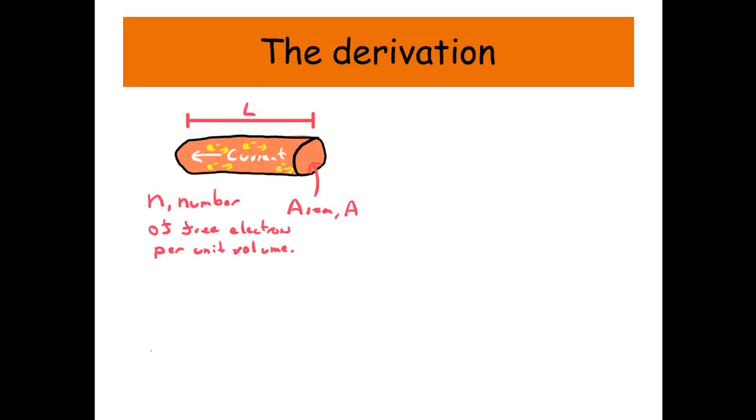So firstly with our derivation, I want you to imagine we've got a material, a wire. It's got a length L, and a cross sectional area A.